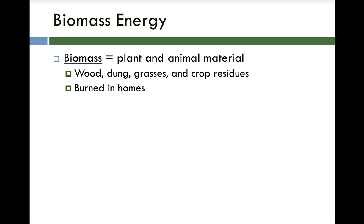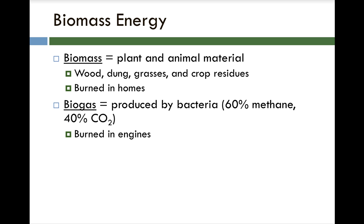These things typically are burned in homes. We do sell charcoal for use in barbecues, but usually biomass is burned in homes for heat or for cooking fires. Biogas is produced by bacteria and is 60% methane and 40% carbon dioxide — a product of bacterial anaerobic digestion. Biogas can be collected and burned in engines the same way natural gas can be, and also used for fires in the home.